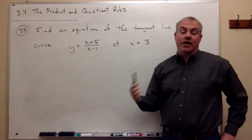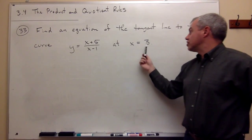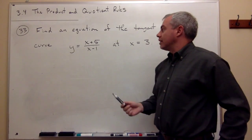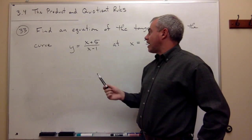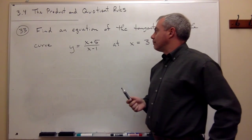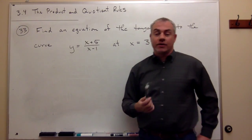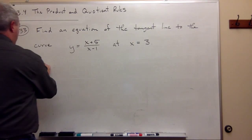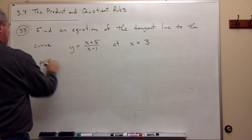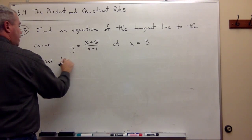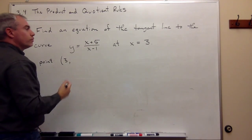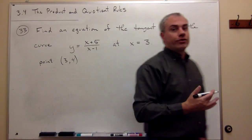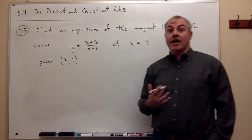I can easily find a point by plugging in 3 to the function and seeing what I get. If I plugged in 3 here, I'd get 3 plus 5, 8 on top, and 3 minus 1, 2 on bottom. So I'd get 8 over 2, which is 4. The point that I'm looking for is 3, 4. So I want this line to go through the point 3, 4, and I want its slope.